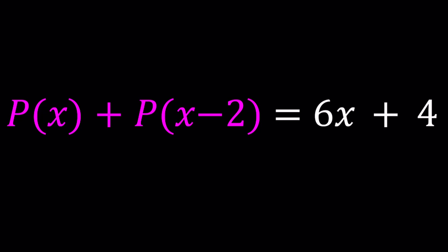We have P(x) and P(x-2), and P(x) is a polynomial, so is P(x-2), and their sum is 6x + 4. We're going to be solving for P, find the polynomial that satisfies this equation, or find the polynomials if there's more than one, or if there's no solutions, then there are no solutions.